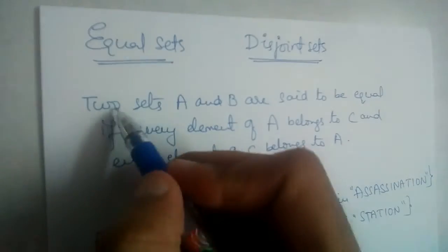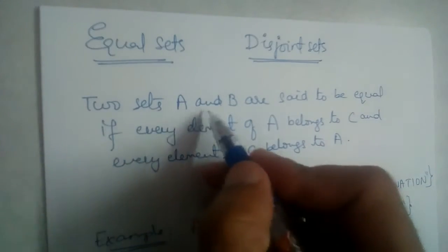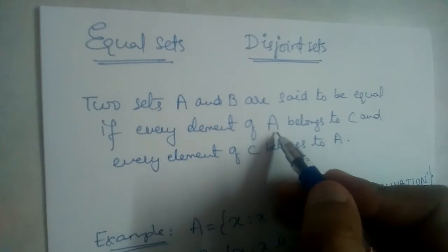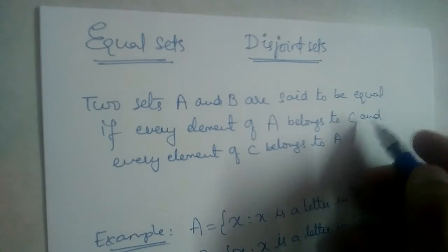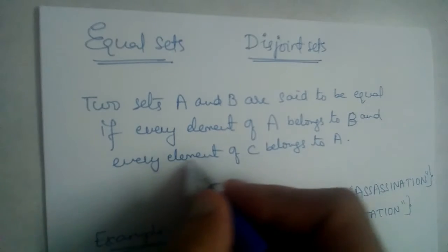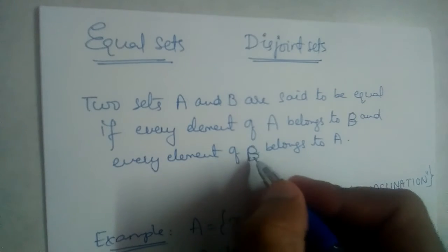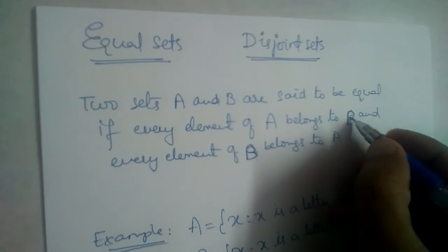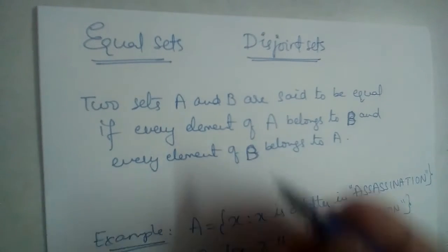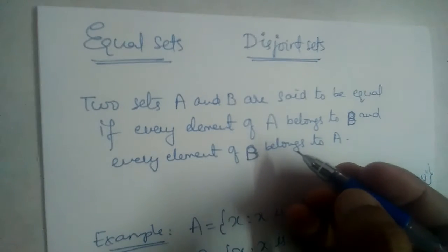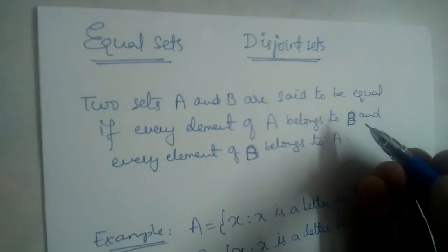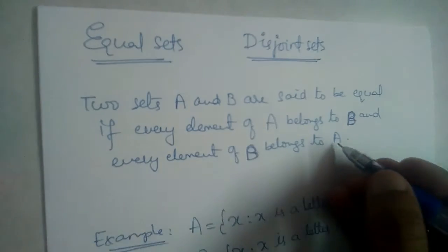Now, equal sets. Two sets A and B are said to be equal if every element of A belongs to B and every element of B belongs to A. So two sets A and B are said to be equal if every element of set A belongs to set B, and every element of set B belongs to set A.